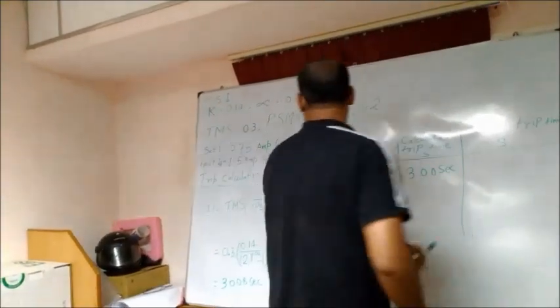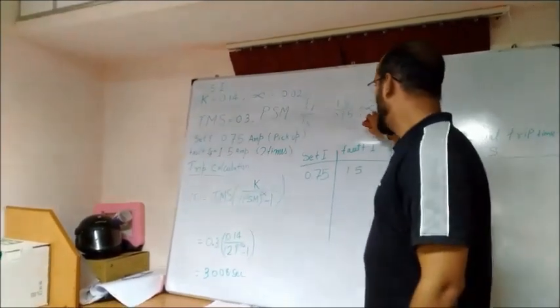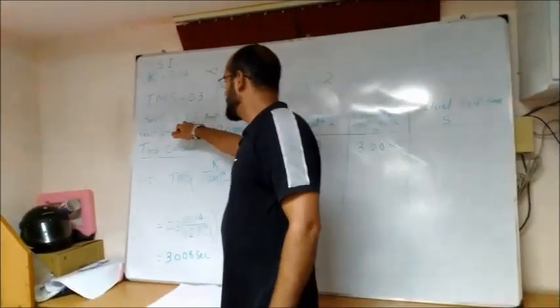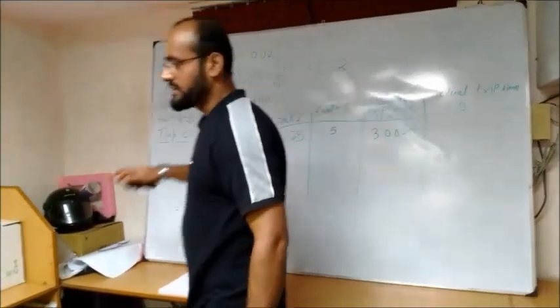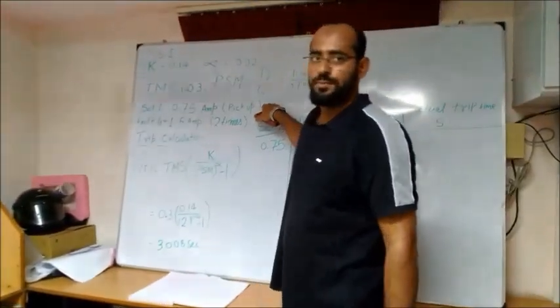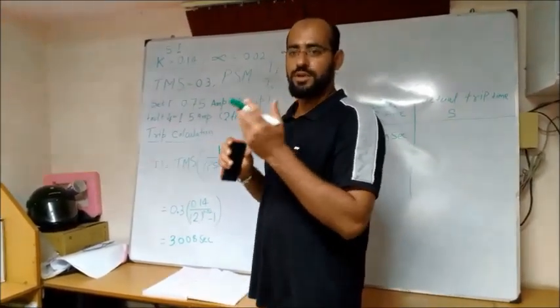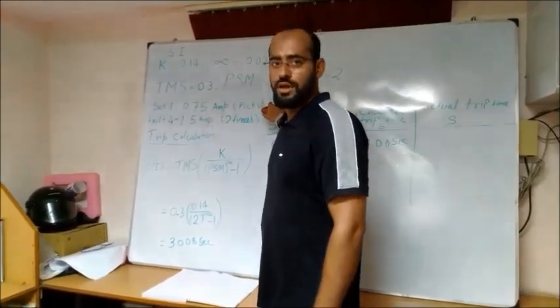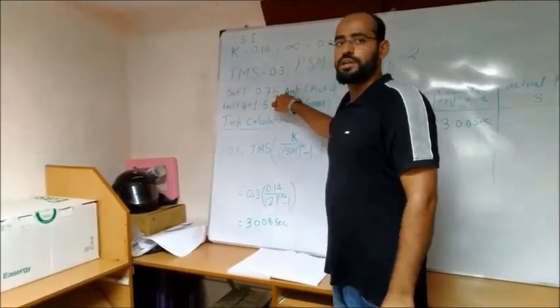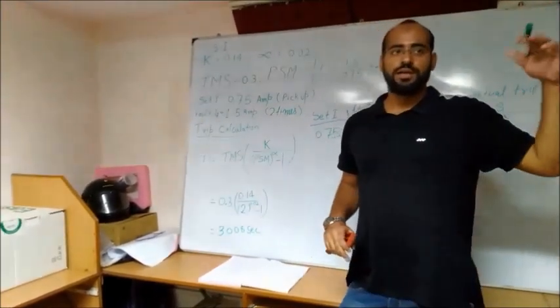And PSN is our fault set current divided by our set current. That is already calculated in 2. PSN is 2. And the set current is 0.75 ampere. I set here. Already I set in 0.75. So that is our pickup current means when the disk is start rotating but not fully rotated but start rotated. That is our pickup current. So and we inject here 2 times of set current.